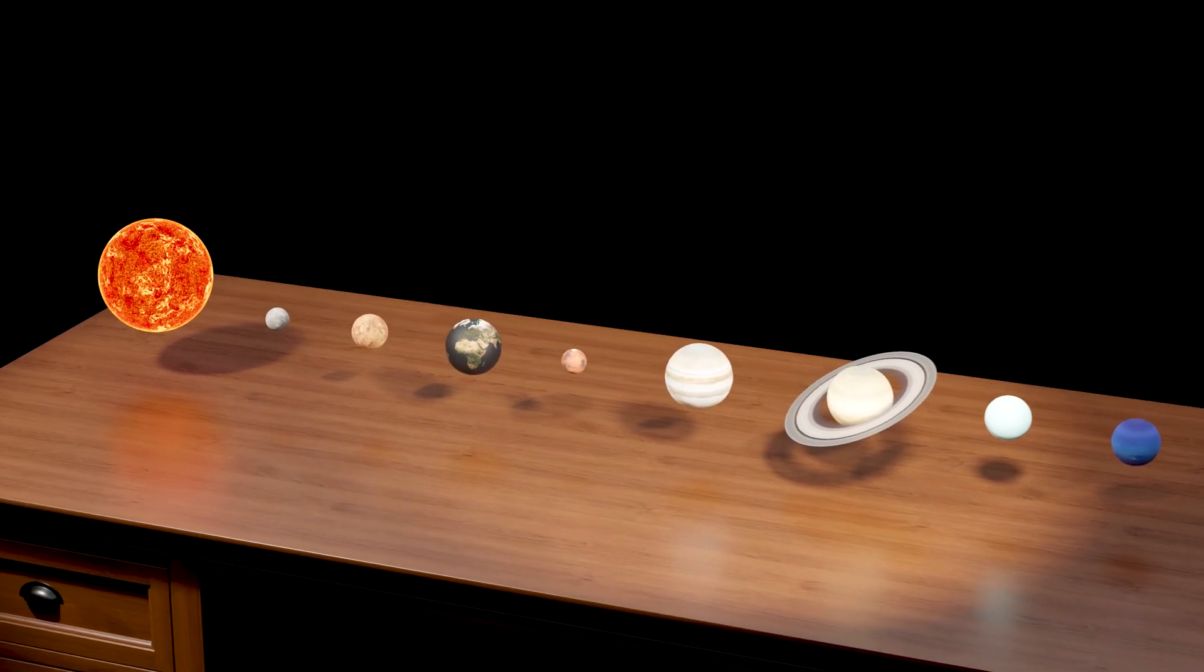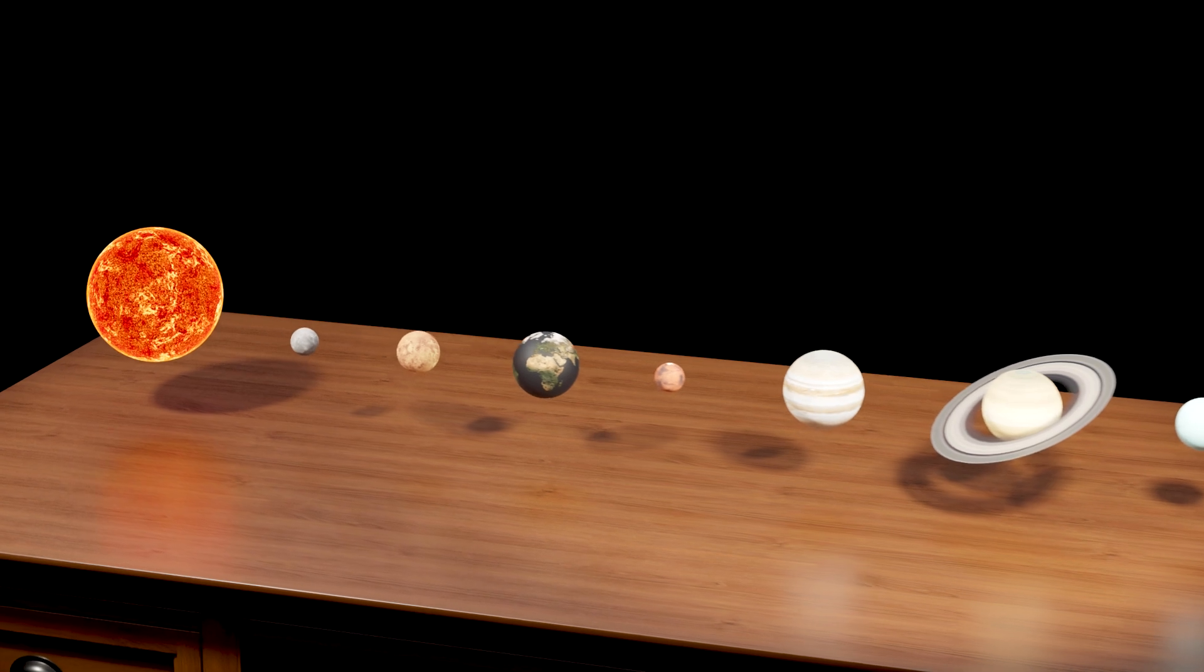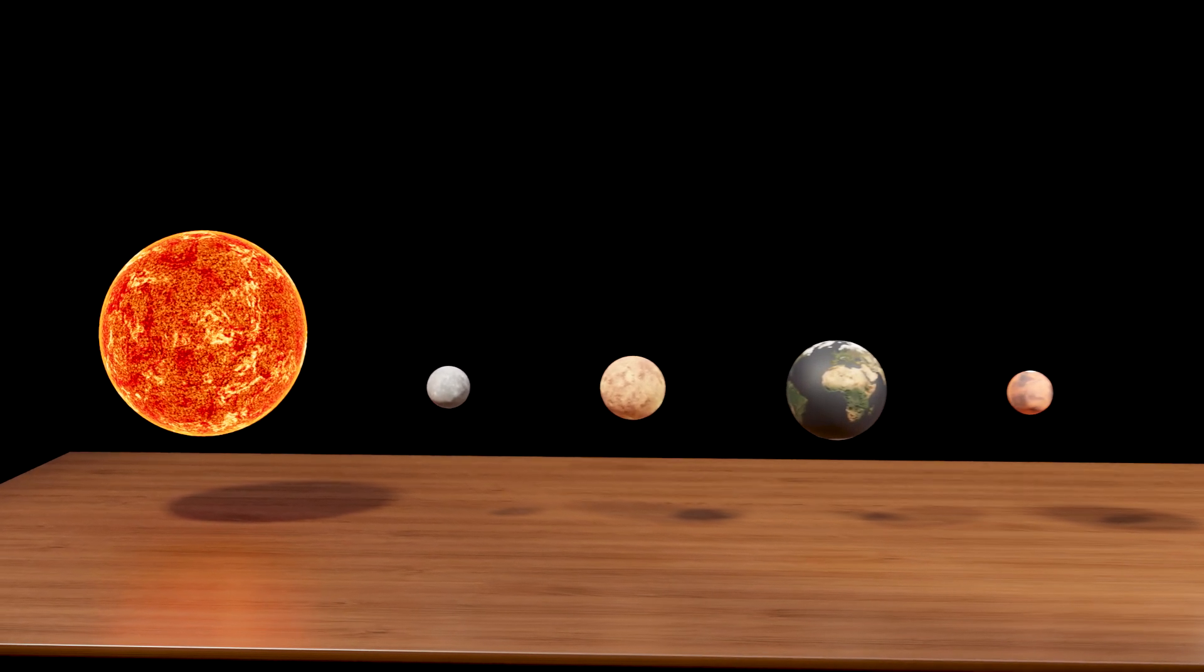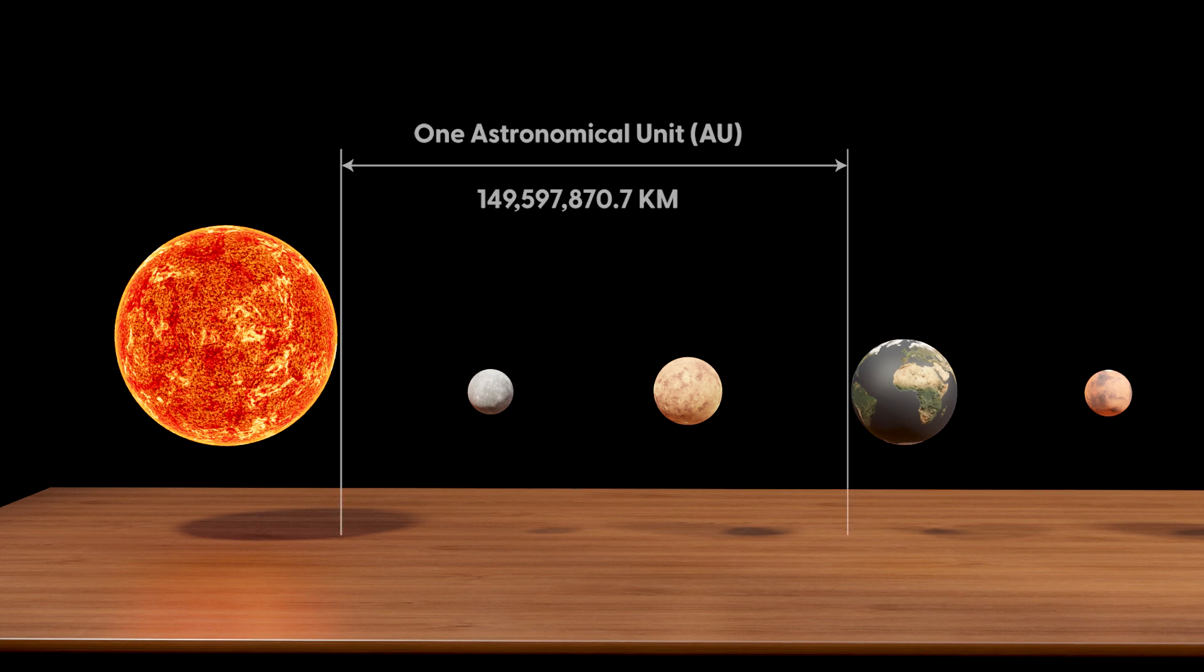In addition to the misconceptions about size, the distances between planets in many models are also often inaccurate. Earth is approximately 150 million kilometers, one astronomical unit or AU, away from the sun.